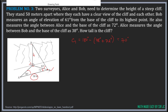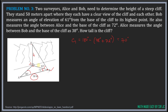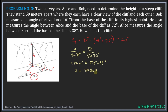Let 'a' be the distance from Bob to the base. Using the Law of Sines: a / sin(38°) = 50 / sin(70°). Cross-multiplying: a · sin(70°) = 50 · sin(38°). Dividing: a = 50 · sin(38°) / sin(70°) ≈ 32.76 meters.